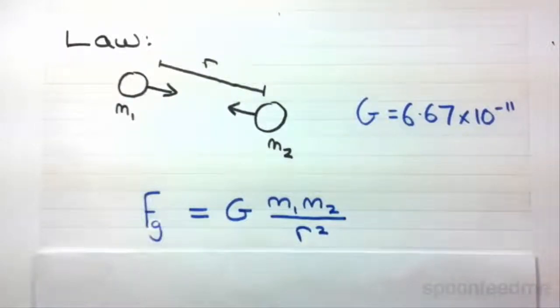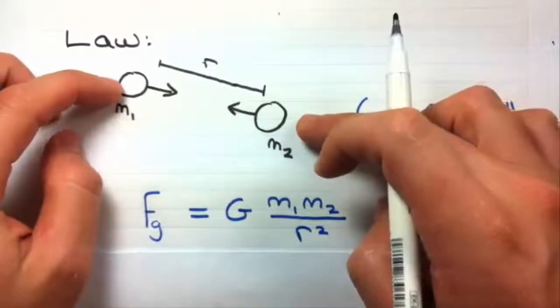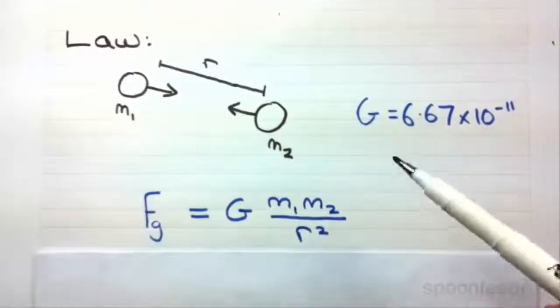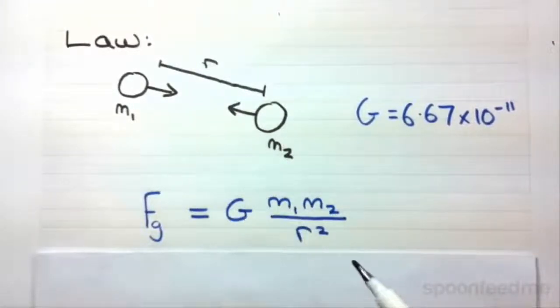So it's that g times the product of the two masses over the distance between the center of the two bodies squared. Which makes sense because the further away the two bodies are, the smaller this gravitational force.